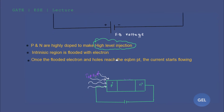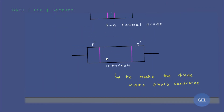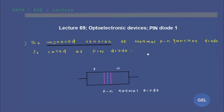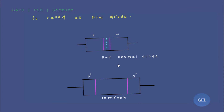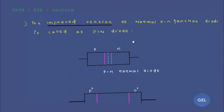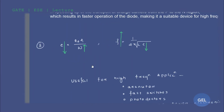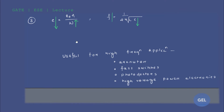Always remember this point: high-level injection. At the beginning of this lecture we discussed the difference between normal, intrinsic, and PIN diode — the improved version of the normal diode is nothing but your PIN diode. We are done with these three points now.